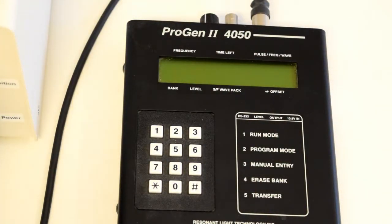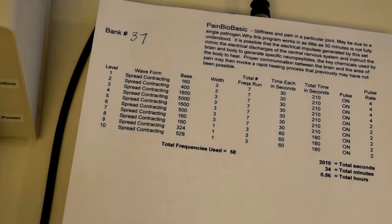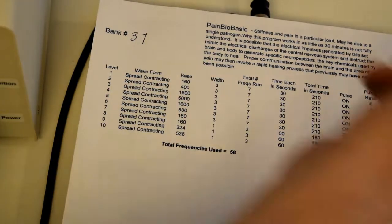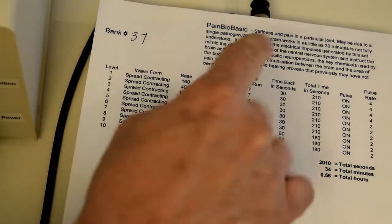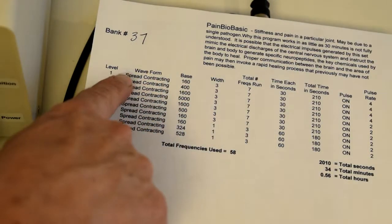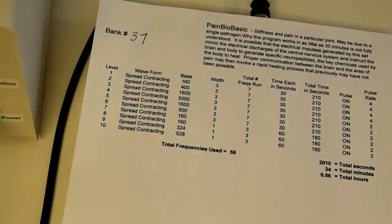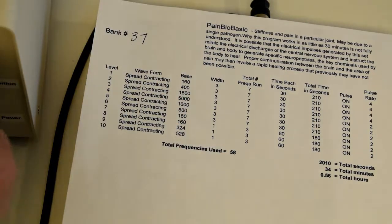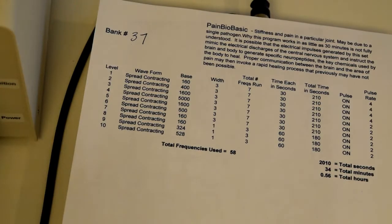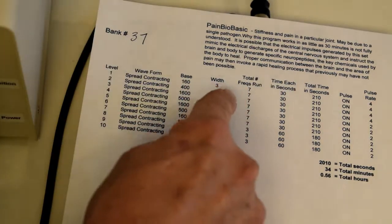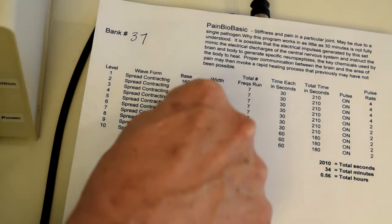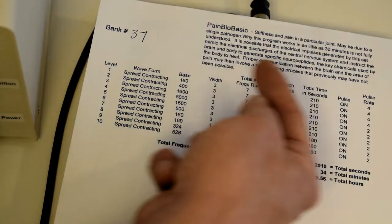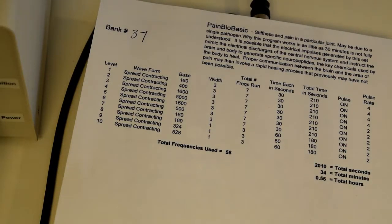What we're going to do is program a custom bank using the same format — I'll try to put this format up in a link — because this is the order that parameters are entered into the Progen. Unlike the single frequency example, this one starts with spread contracting and gives the base and the width. Spread contracting means it starts on 163 Hz, then goes to 157, then 162, then 159, then 160, so the total number of frequencies run is 7. A width of 3 means it starts at the frequencies in the center and contracts in. That's thought to help prevent pathogen mutations.